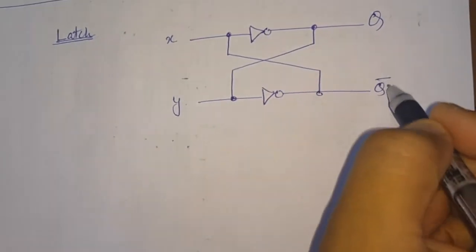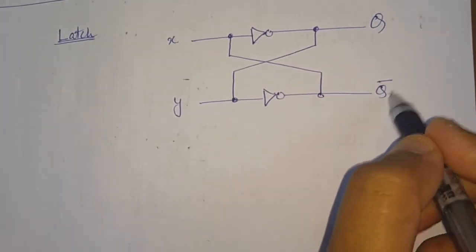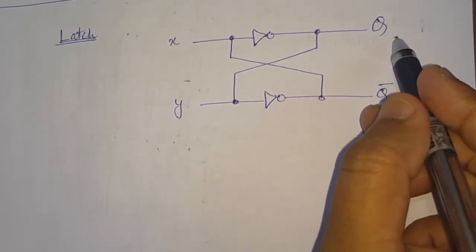Though it has two outputs, that means this one is the one output and this one is the complement of this one, we are getting only one single bit output.